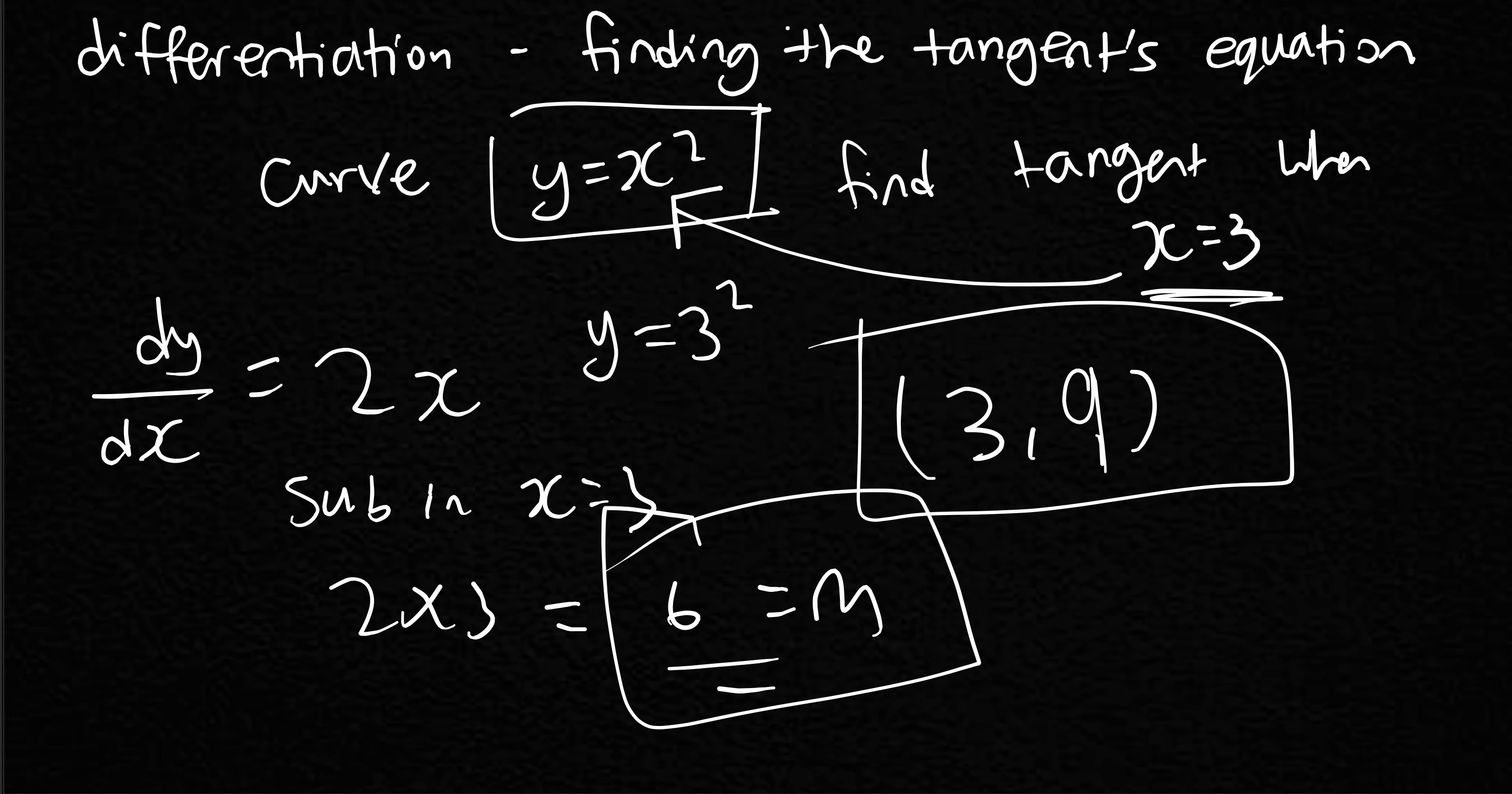And just to summarize how you found it, you have the curve equation provided, and you have the x-coordinate provided. You're finding the tangent when x is 3. dy/dx, the equation to find the gradient function, sub in the coordinate to find the gradient of the tangent, sub x value to get the y value, and that's going to give you 3, 9.